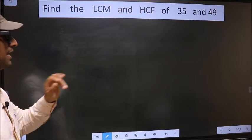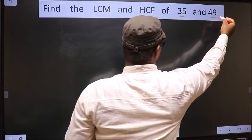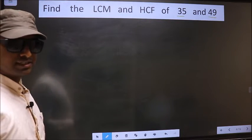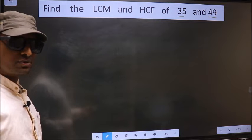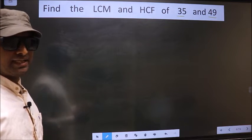Find the LCM and HCF of 35 and 49. To find the HCF and LCM, first we should do the prime factorization of each number separately.